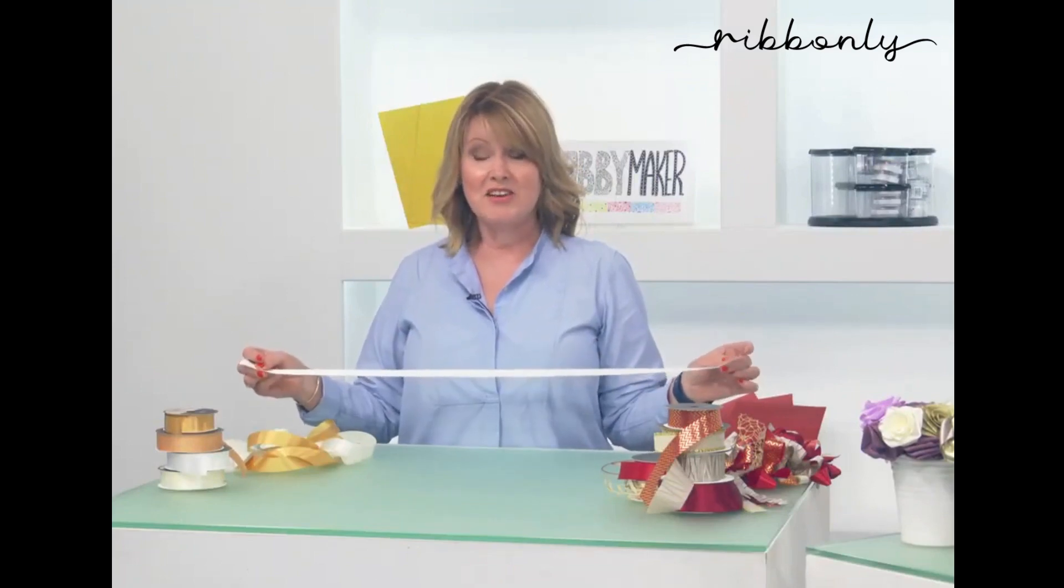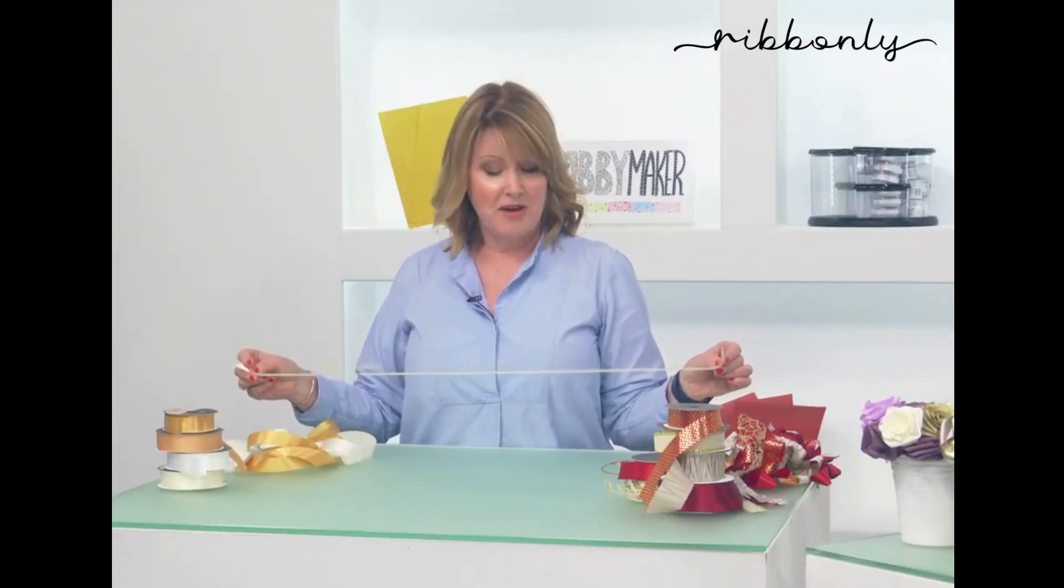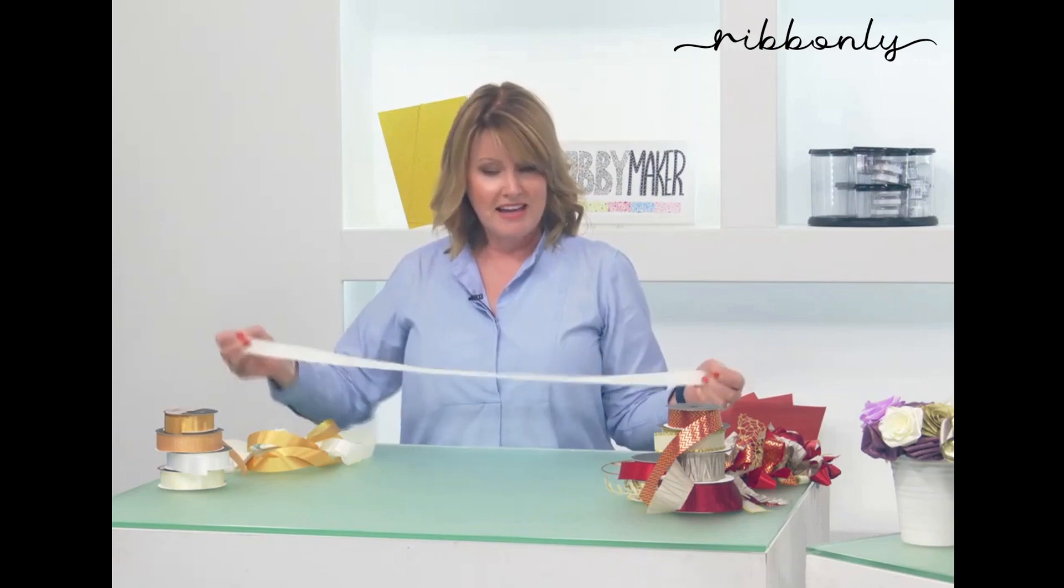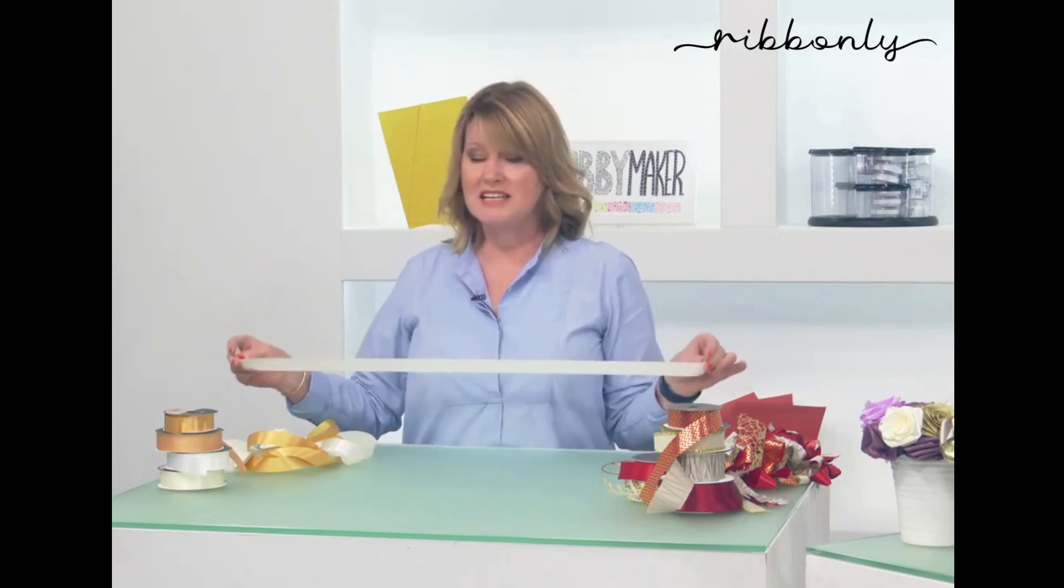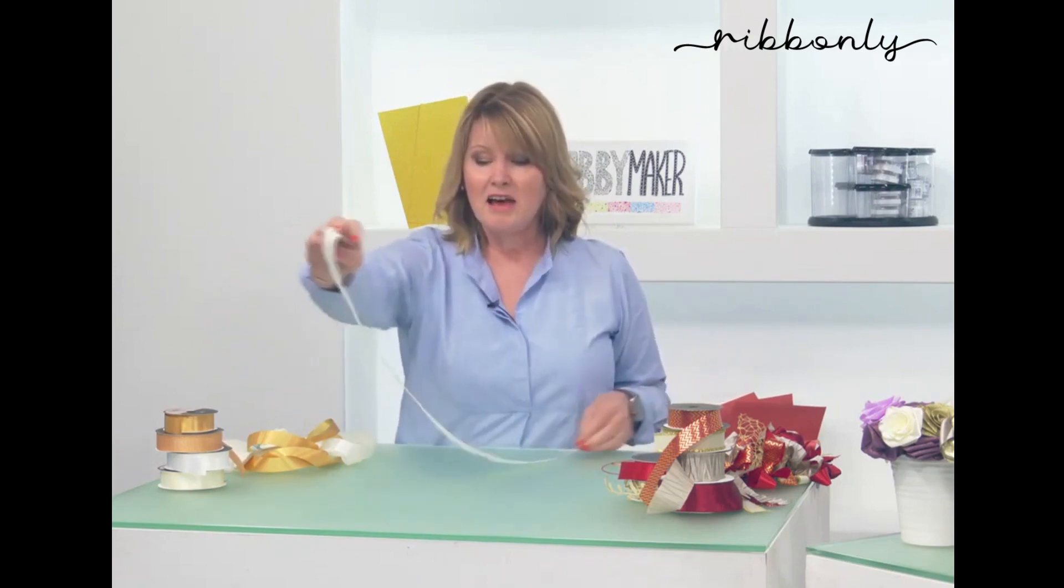Basically cut 80 centimeters of your ribbon of choice, so I am choosing pearl in our single-sided satin. 80 centimeters and then I'm putting the ribbon out in front of me like that. Now I'm right-handed so I work to my right, but if you were left-handed you would work to your left, so it's exactly the same instructions.